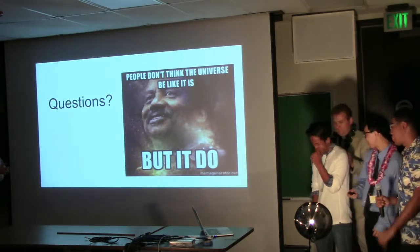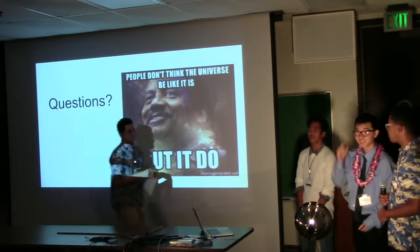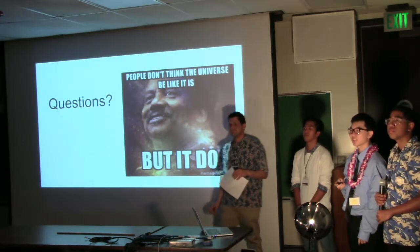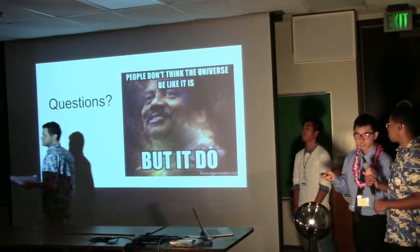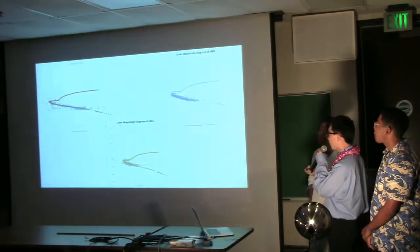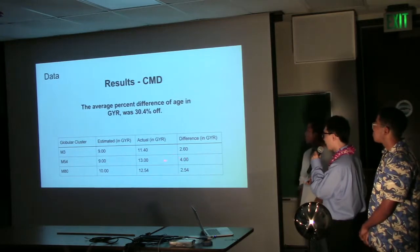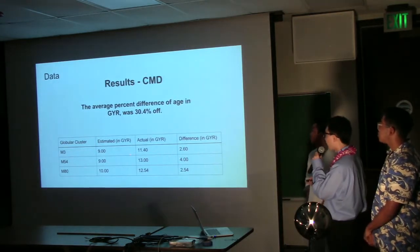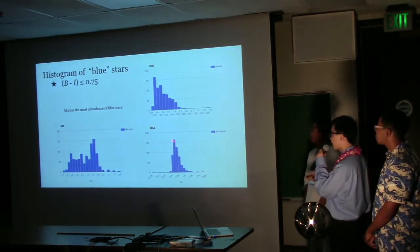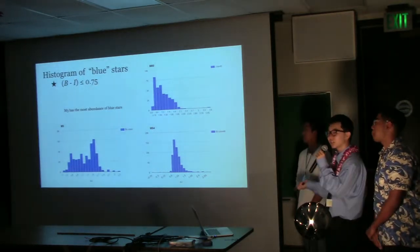Question: You were able to determine which cluster was the youngest — could you also differentiate which was the oldest? Looking back at the chi-squared calculations, the oldest of the three was M54. This is also confirmed in the histogram: M54 has fewer overall blue star counts compared to the others, indicating older stars and more red stars than blue stars.